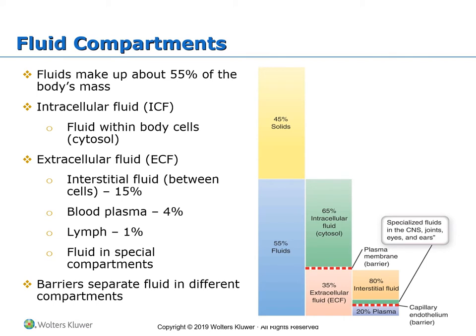The extracellular fluid, or ECF, includes all fluids not located inside cells and is composed of several sub-compartments. The first is the interstitial fluid, or tissue fluid — the fluid located in all the spaces between the cells in different tissues throughout our body, making up about 50% of body weight. The second sub-compartment is blood plasma, about 4% of body weight — the fluid part of the blood. We also have lymph, the fluid drained from tissues through the lymphatic system back into the cardiovascular system, about 1% of body weight.